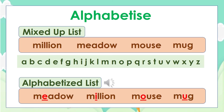Let's have a look at another mixed-up list: million, meadow, mouse, and mug. When we arrange them in alphabetical order, we get meadow, million, mouse, and mug.